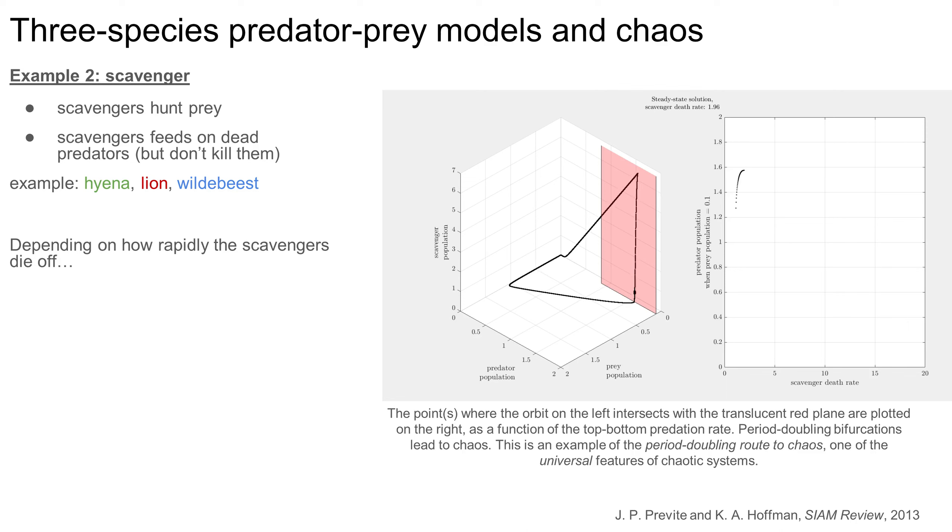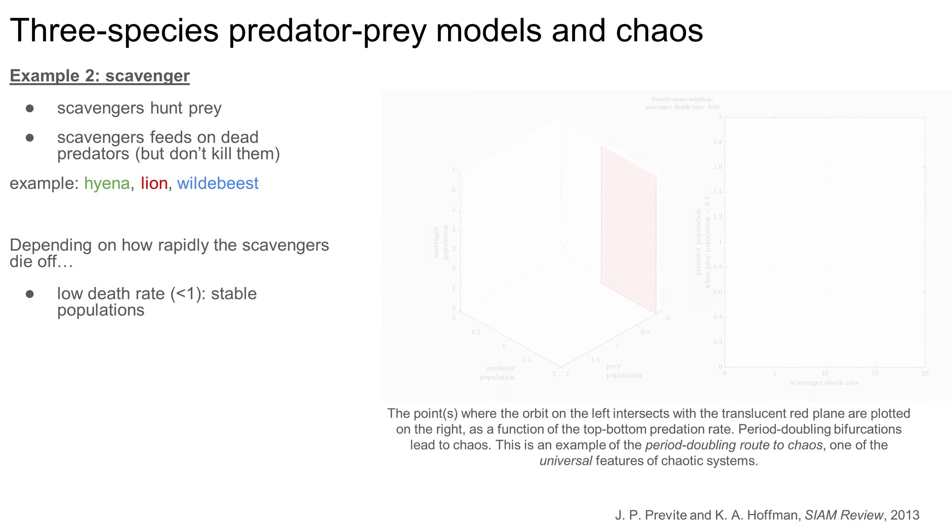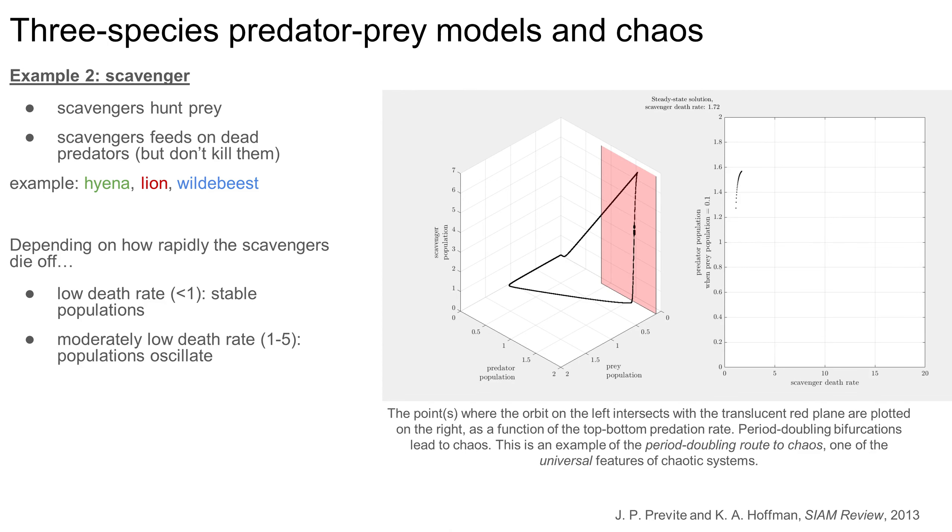The setup for this example is pretty much the same as last time. In this example, I'm varying the rate at which the scavenger population dies off. I'm plotting the steady state behavior of the food web in phase space on the left, and the pink rectangle represents my Poincaré section. On the right, as with the previous example, I'm plotting the predator population every time the orbit passes through the Poincaré section. At low scavenger die-off rates, the population levels are stable. As the scavenger die-off rate goes up a bit, the population levels start to oscillate. Once the scavenger die-off rate climbs above about 5, the food web begins the period doubling route to chaos, much like we saw in the previous example with Omnivory. Chaos is in full swing once the scavenger die-off rate is around 11. Interestingly, there follows a brief window of order, but then chaos resumes again at a die-off rate around 12.